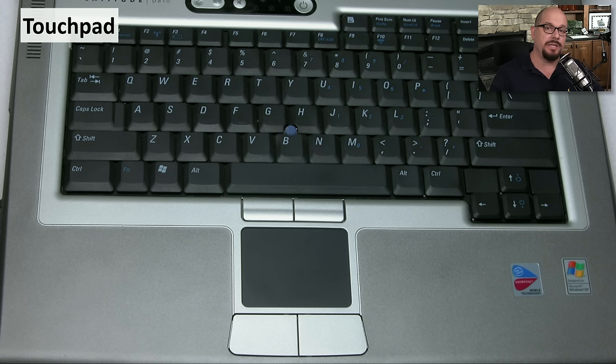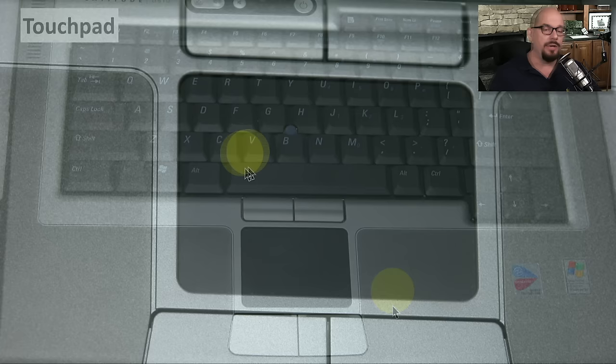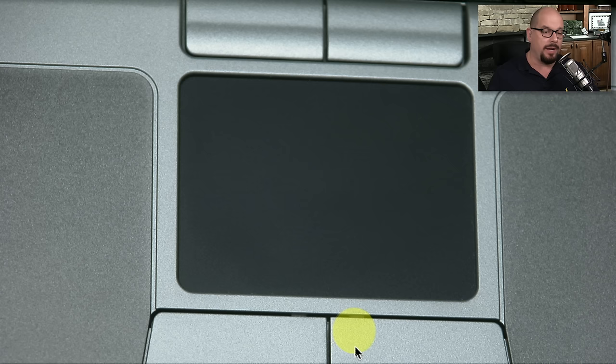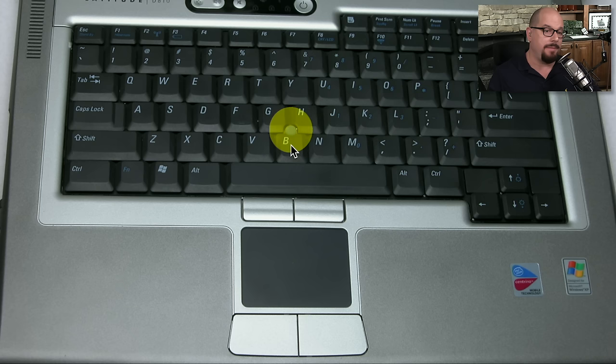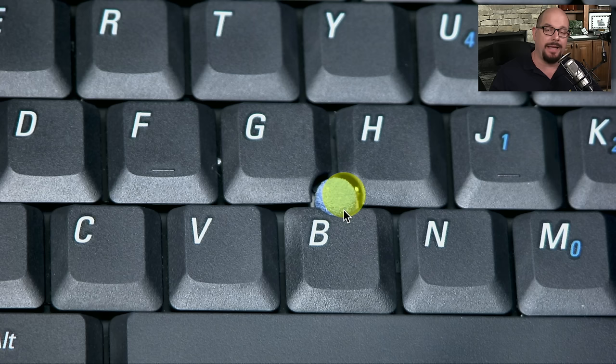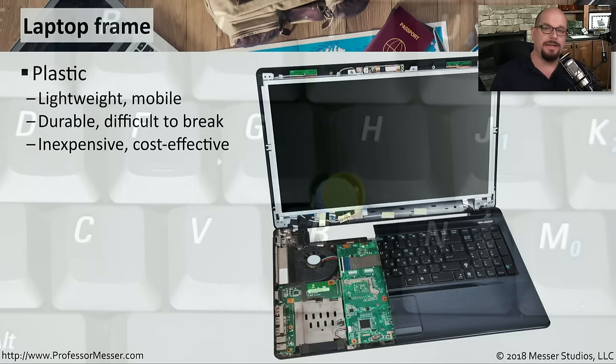Laptops are very mobile computing devices and you often use them on your lap, which means there's not much room for a traditional mouse. For that reason, laptops include other types of mouse input. Very commonly a touchpad is used — usually just underneath the keyboard — where you move your finger to control the cursor, with left and right buttons equivalent to a traditional mouse. Some laptops also have a pointing stick in the middle of the keyboard; you put your finger on it and push in a direction to move the mouse cursor.